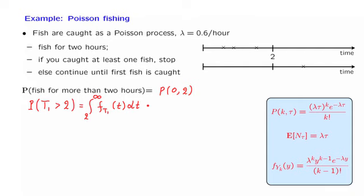More generally, for Poisson process problems, an event of interest can sometimes be expressed in terms of number of arrivals, or sometimes in terms of arrival and inter-arrival times, or sometimes both approaches are possible.